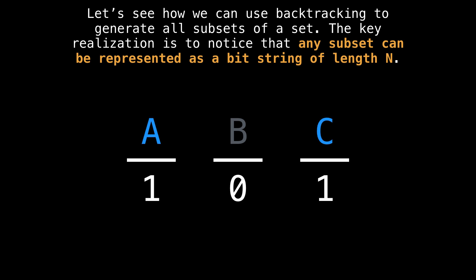But now consider the bit string 101. This bit string would correspond to a set containing two elements, in particular, a and c, because those are the elements with ones.